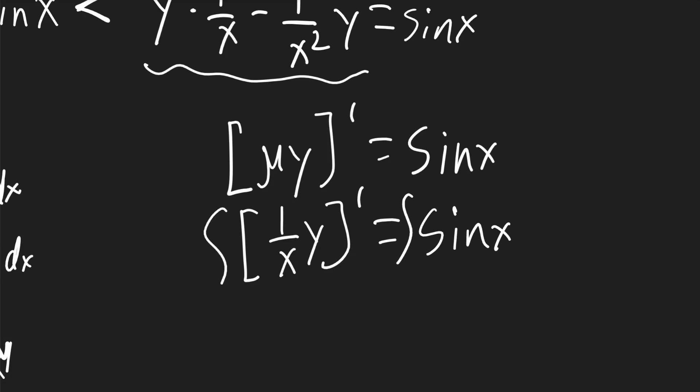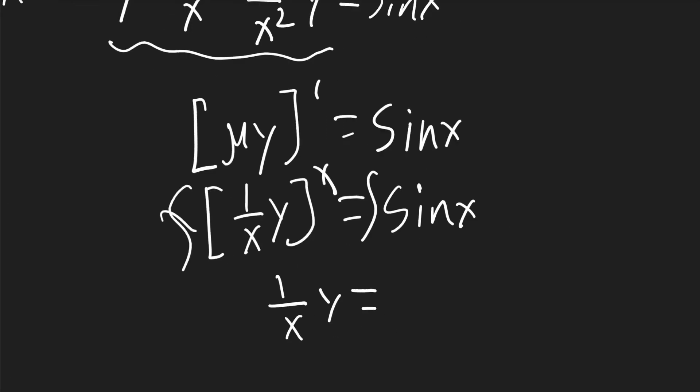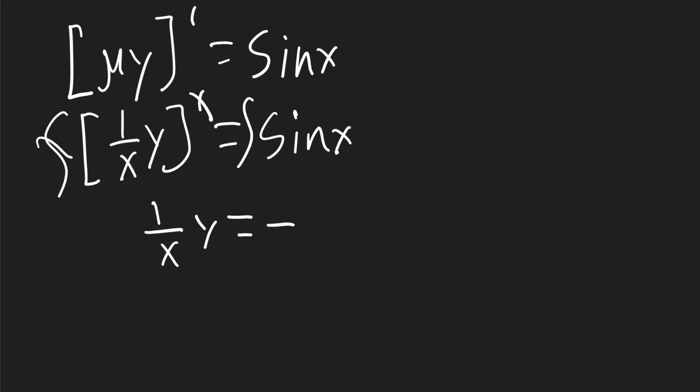Now we can take the integral of both sides. On the left, the integral will cancel with the derivative. We'll have 1 over x times y. That'll be equal to, and the integral of sine of x is negative cosine of x plus c.